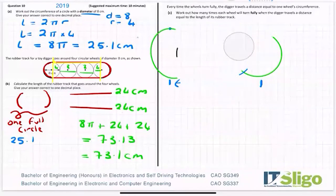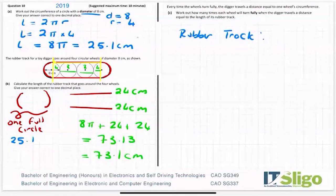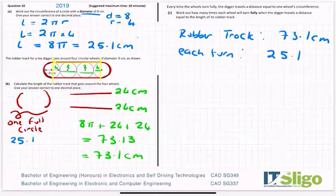And then once you can visualize that, these questions get it a tad easier. So any circle at all, once it turns fully, it will travel a distance equal to one wheel circumference. Work out how many times each wheel will turn fully when the digger travels a distance equal to the rubber track. Well, the rubber track, it's 73.1 centimeters and each turn of a wheel will travel 25.1 centimeters. So therefore, if I divide one by the other, I will figure out how many times does that wheel turn.